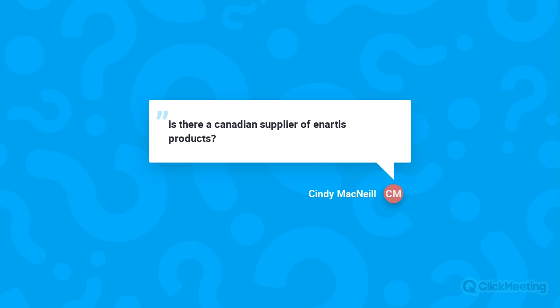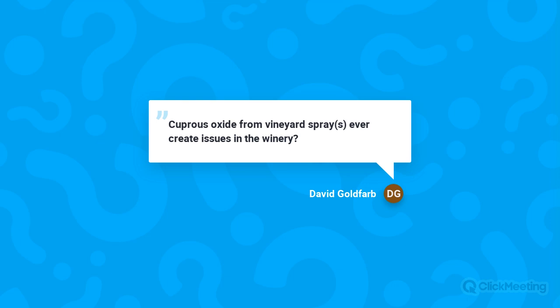Sandy McNeil asks about a Canadian supplier for Anarté products. Bosa Grape carries our products and is based in BC, Vancouver. We're still looking for distribution in other areas of Canada. David Goldfarb asks whether copper oxide from vineyard sprays can create issues in the winery. Potentially — if copper is on the fruit skins at harvest, especially with mechanically harvested fruit that may include leaf material, it could increase copper levels in the must. I haven't seen studies on this directly, but it's worth investigating.